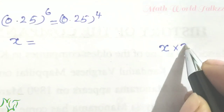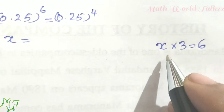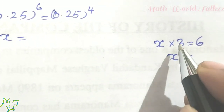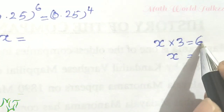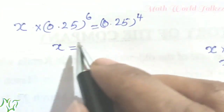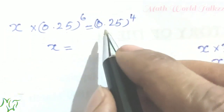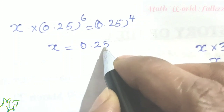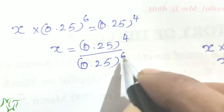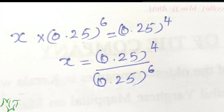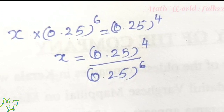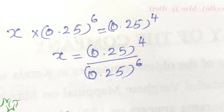Let's look at a simple example: x into 3 equal to 6, so x equals 6 divided by 3, which is 2. Similarly, x equals 0.25 raised to 4 divided by 0.25 raised to 6. We use the division rule, and the power in the denominator is bigger, so we use the second rule.